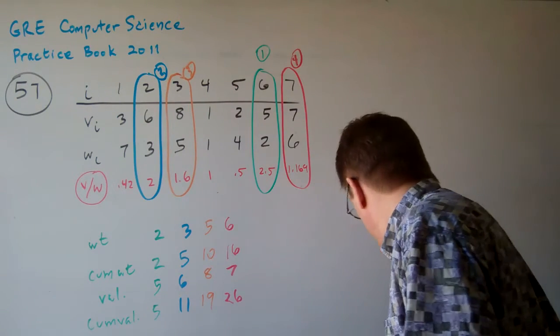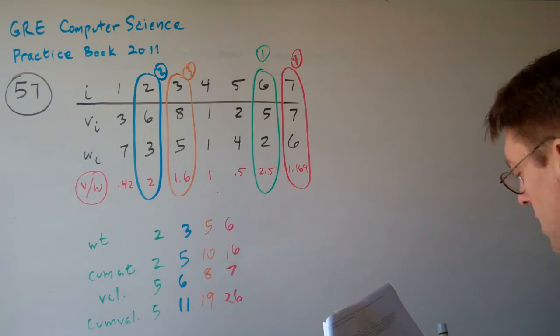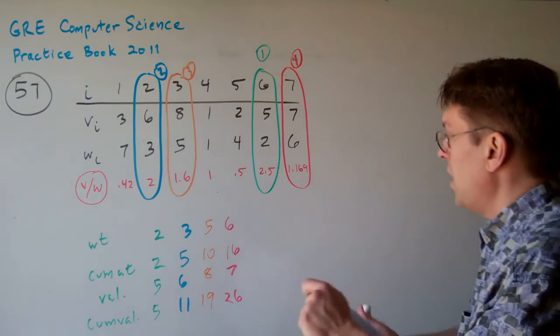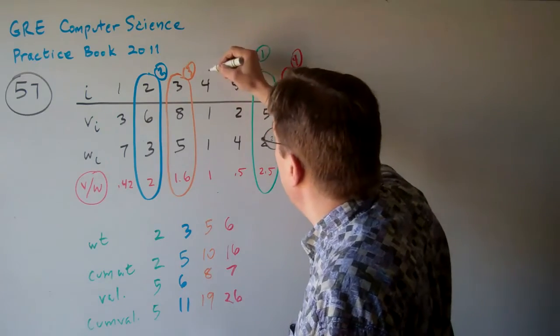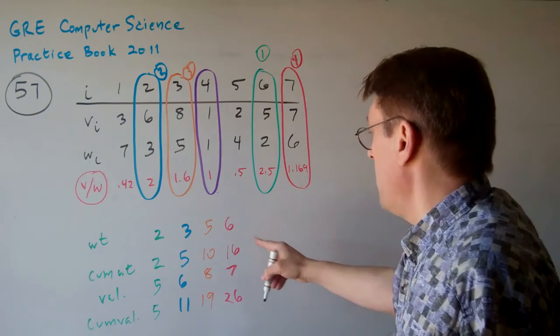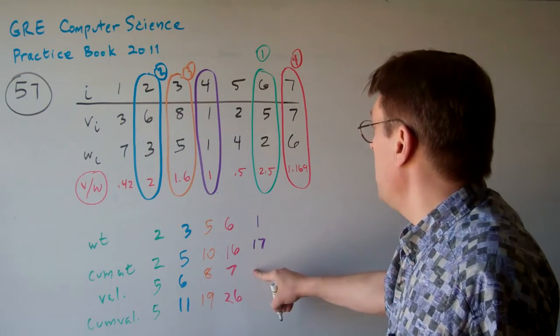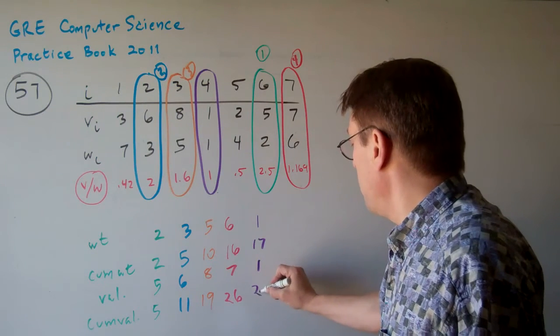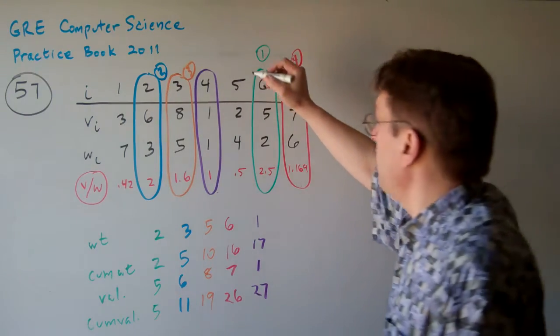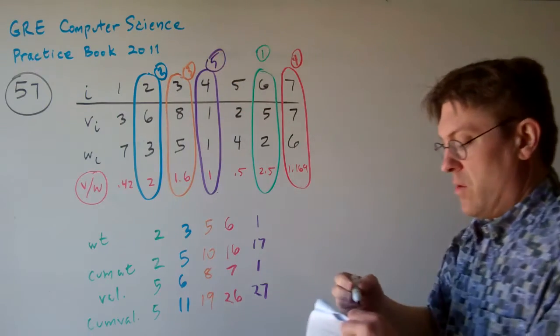Now the fifth one is going to be item number 4, it looks like. Item number 4 has a value weight ratio of 1. So here the weight is 1. So that's going to bring us up to 17. And the value is 1. It brings us up to 27. That's item number 5, step number 5 of this algorithm that we're going through.